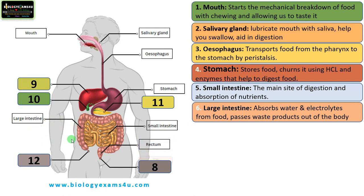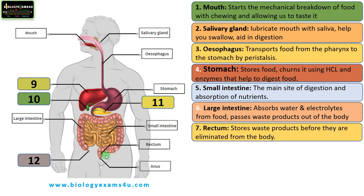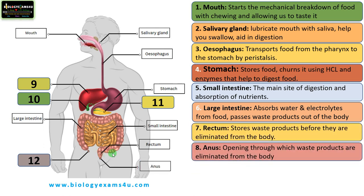Then these waste products move to the rectum, a structure that stores waste products or feces before elimination. Finally, the anus is the opening through which waste products are eliminated from the body. This is how food moves through the body during digestion, starting from the mouth to the anus, with nutrients absorbed in the small intestine. These structures form the alimentary canal that starts from mouth to the anus.